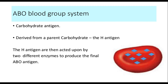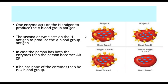The ABO carbohydrate antigens are derived from a parent carbohydrate which is the H antigen. This H antigen is then acted upon by different sets of enzymes to produce different products. One enzyme can act upon the H antigen to produce a new carbohydrate — the A antigen. Another enzyme can act on the same H antigen and produce the B antigen. Some people may have both enzymes, so they express both A and B antigens.